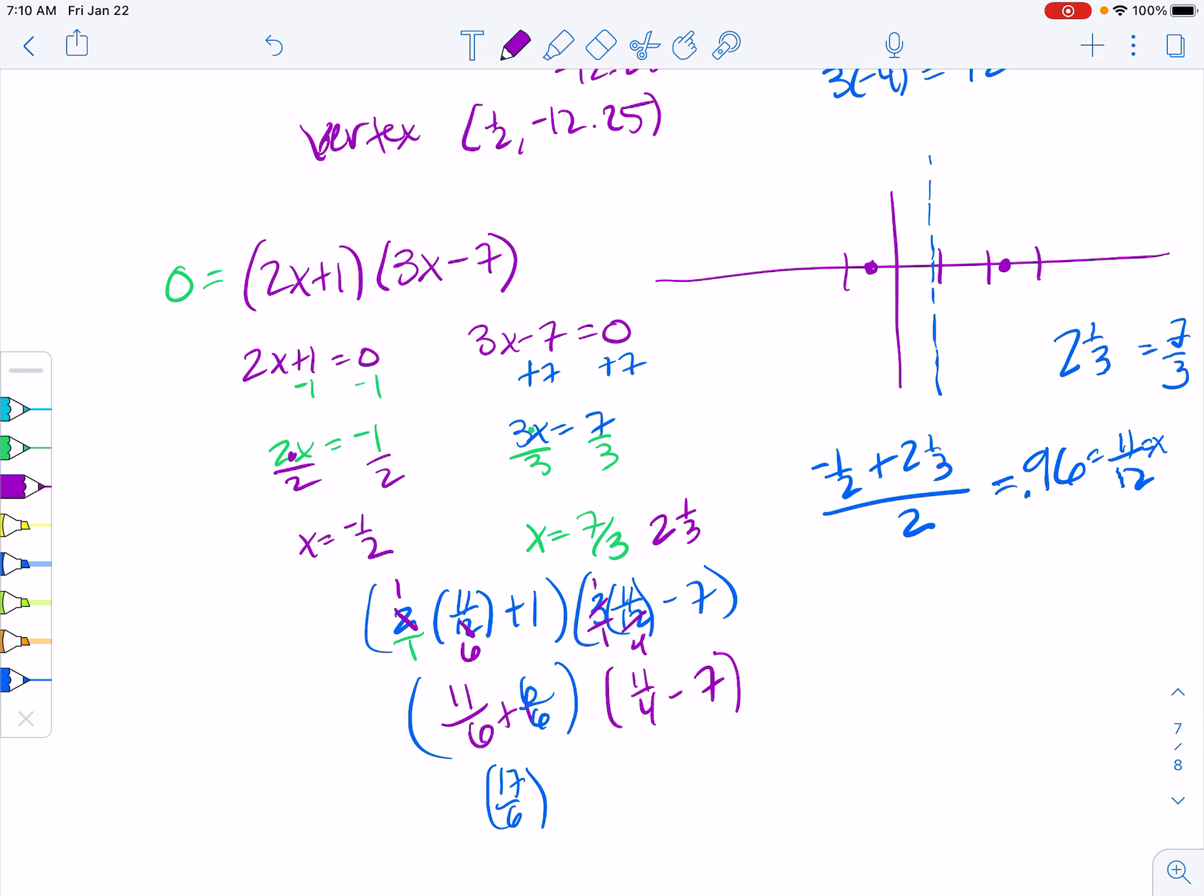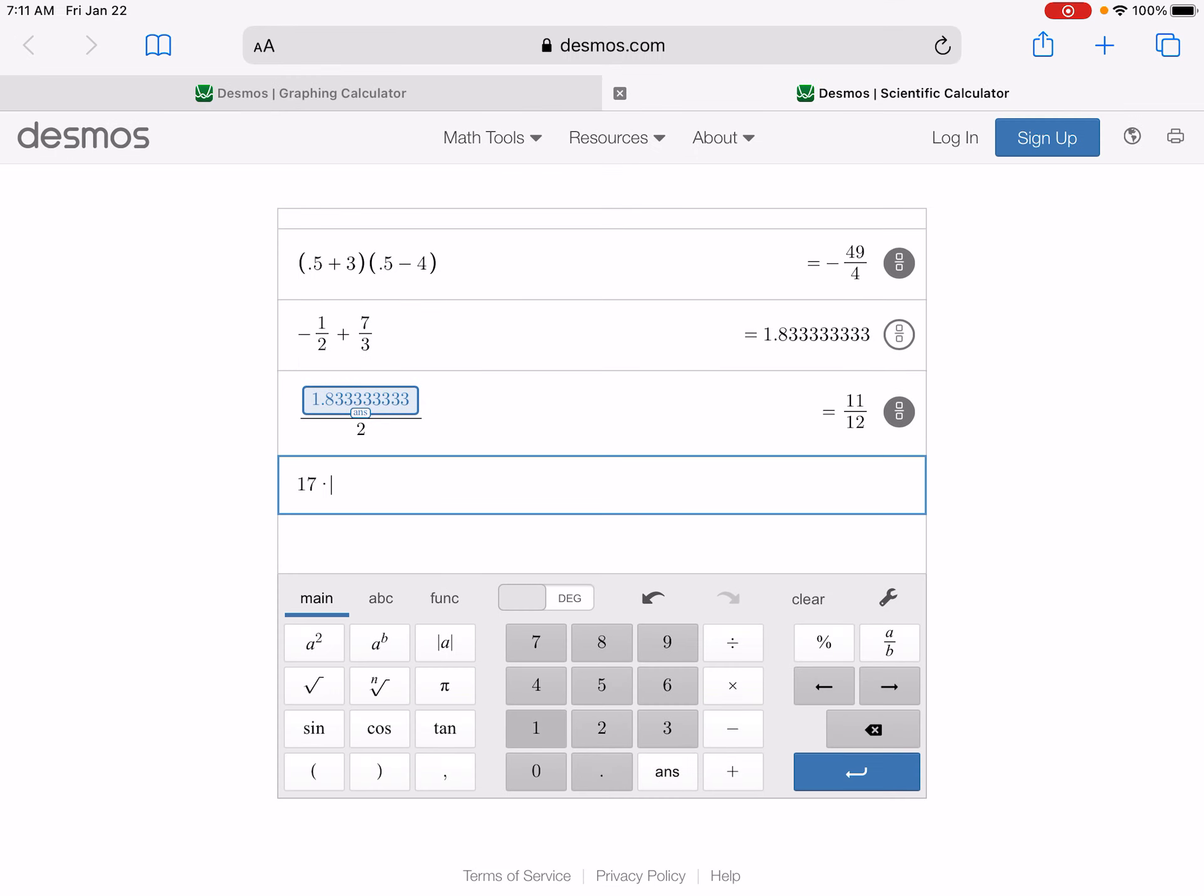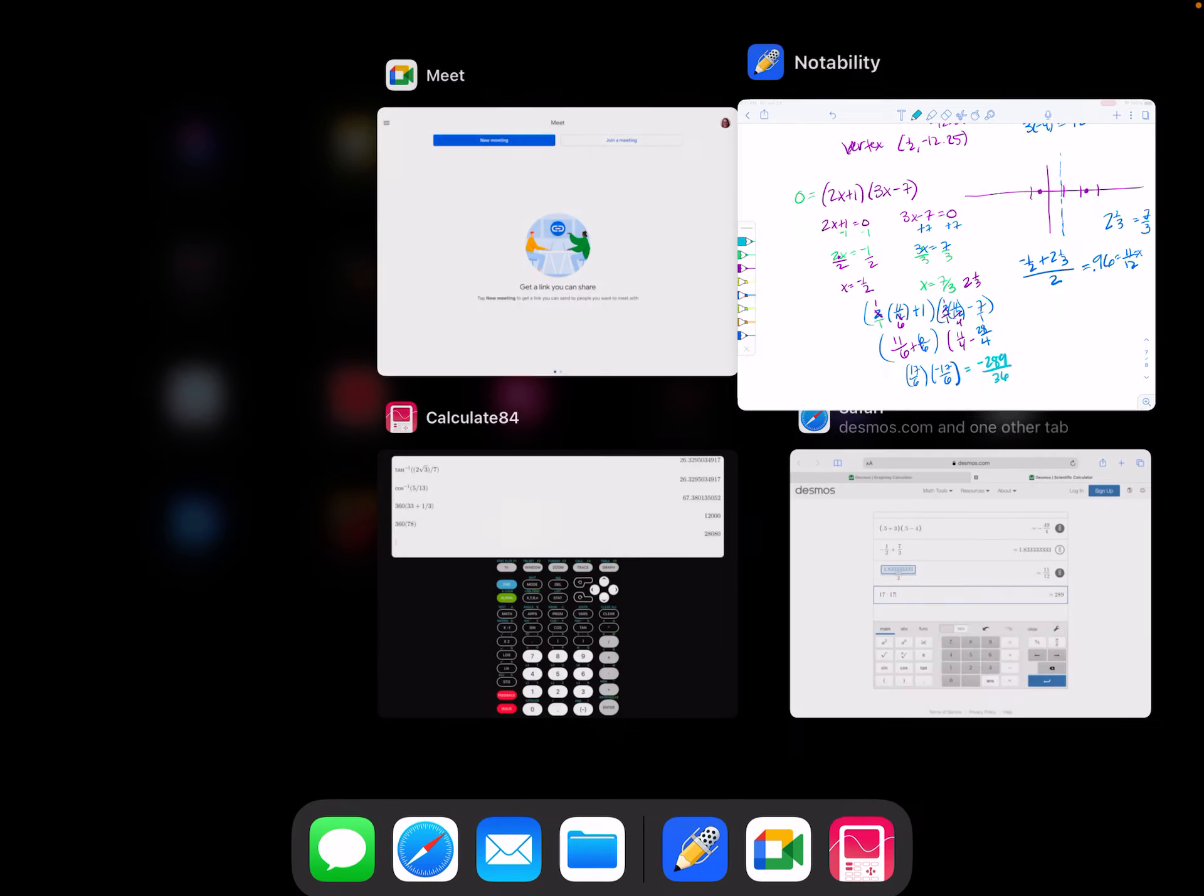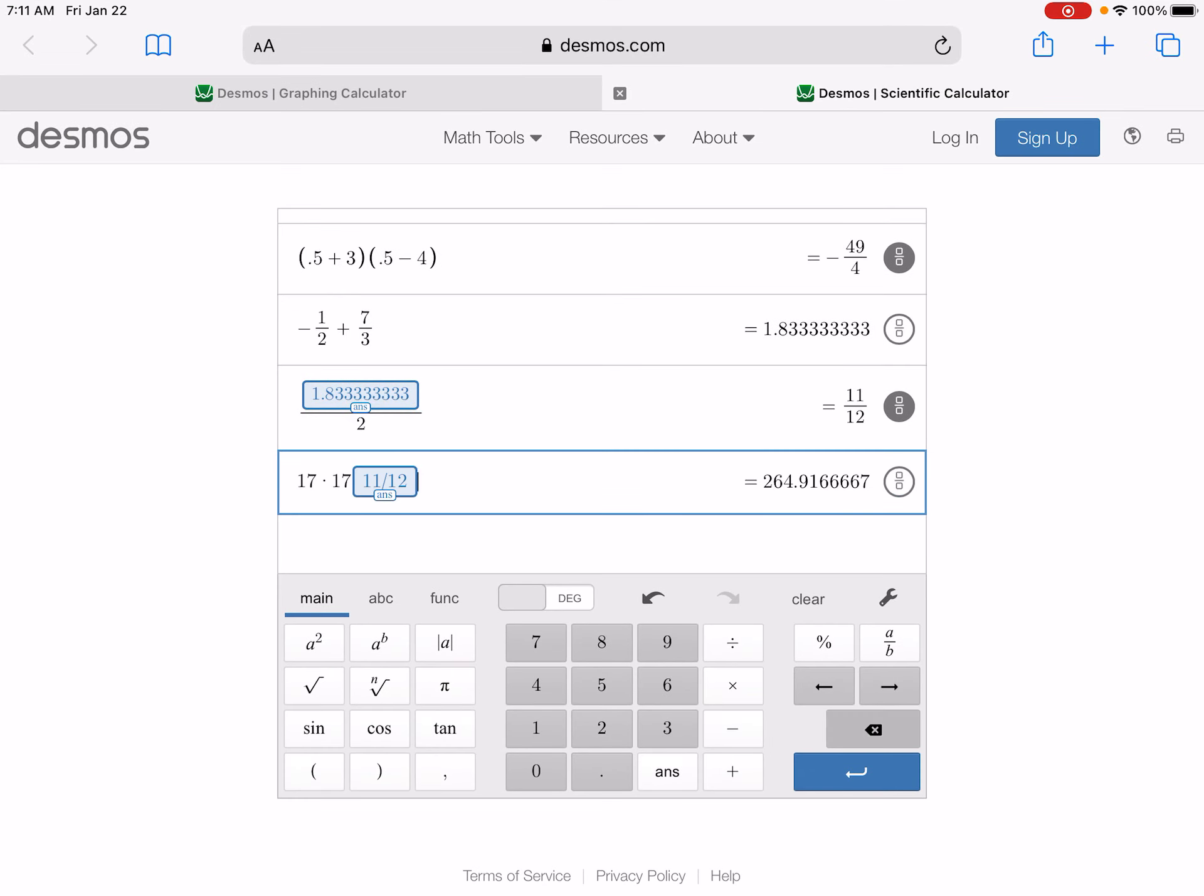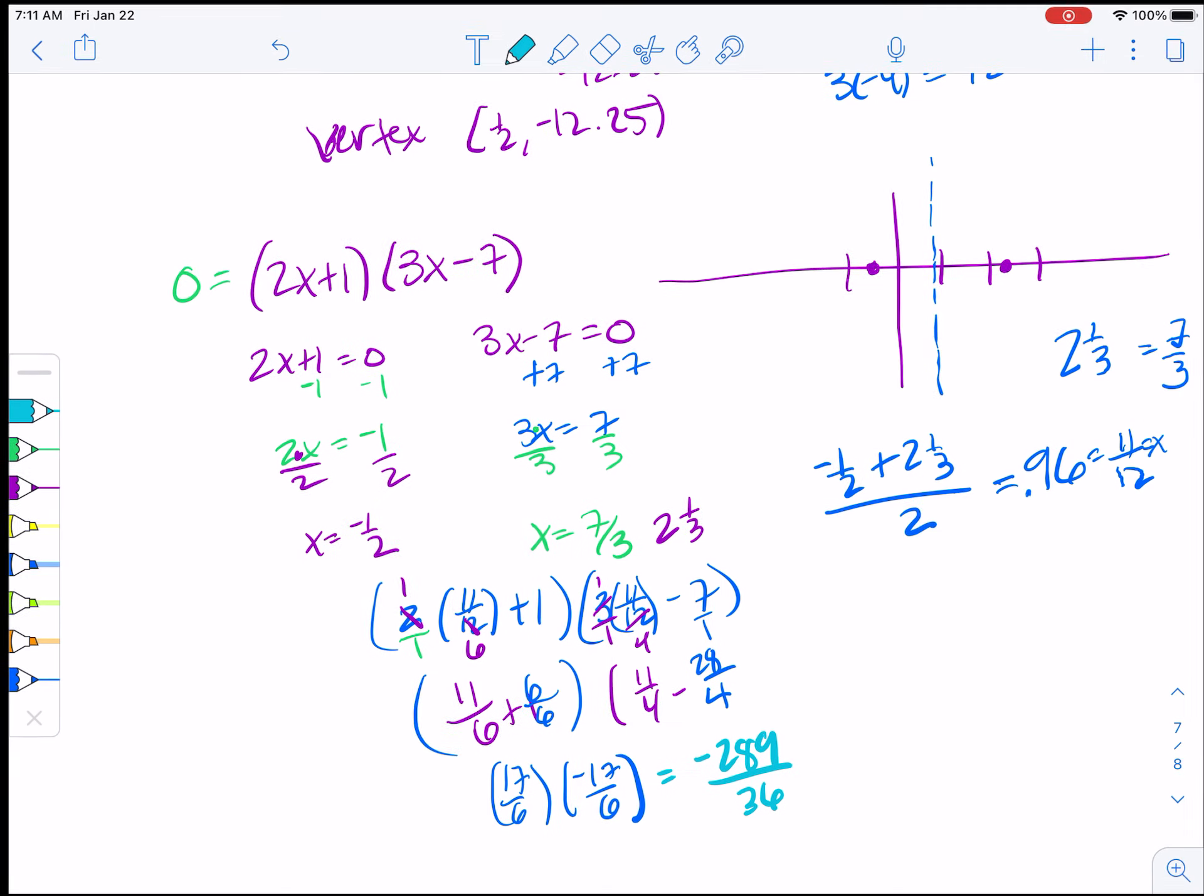That 7, if we get a common denominator, is really over 1, so we need a common denominator of 4. To go from 1 to 4, we multiply the top by 4, so this would be minus 28. If we do 11 minus 28, that gives us negative 17 fourths. We can multiply straight across. We can do 17 times 17, which gives us 289. It'll be negative 289, because one of them is negative. And then 6 times 6 is 36. If we want to figure out what number that is, we would do 289 divided by 36, which gives us 8.03.